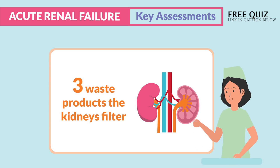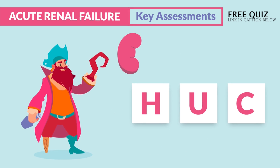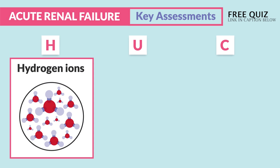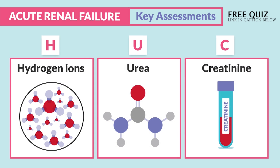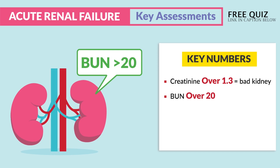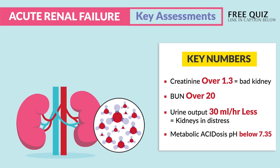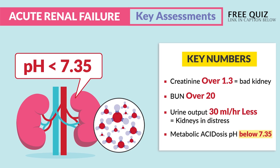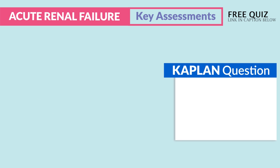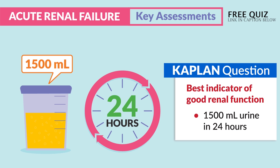For assessment findings, remember the acronym HUC — since kidneys look like a pirate hook. H is for hydrogen ions (very acidic), U is for urea, and C is for creatinine. Key numbers: creatinine over 1.3 is bad kidney; BUN over 20 is very bad; urine output 30 mL per hour or less means the kidneys are in distress; metabolic acidosis is pH below 7.35. A Kaplan question asked the best indicator for good renal function — the answer is 1,500 mL of urine in 24 hours.